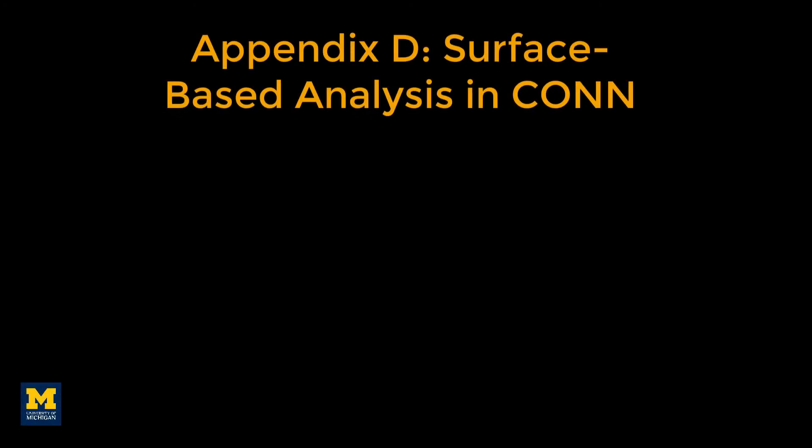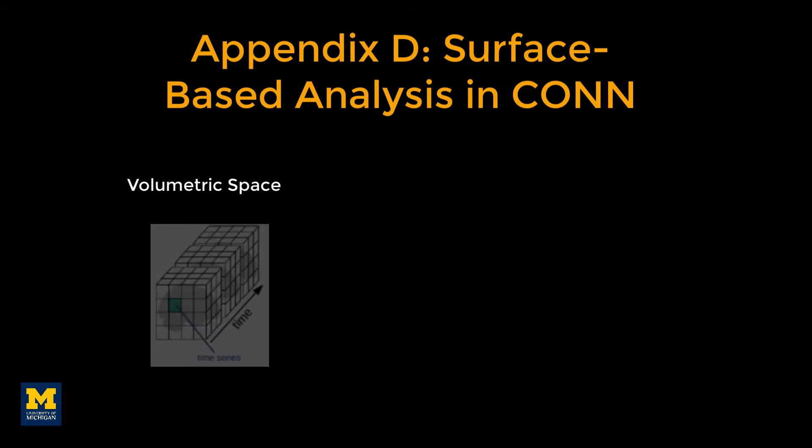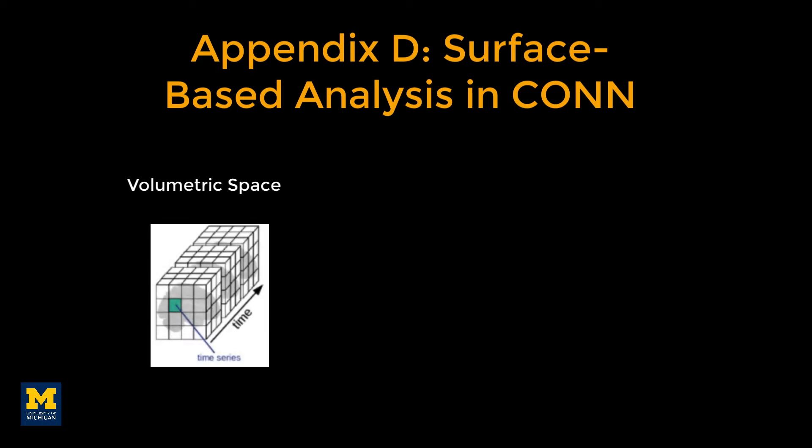The connectivity analyses done in the previous chapters were performed in volumetric space. Each image has individual voxels acquired with a specific length, width, and height, and the time series is averaged across groups of voxels within each region.